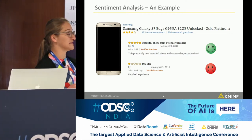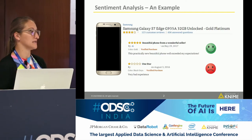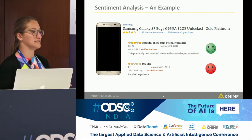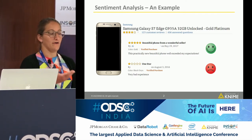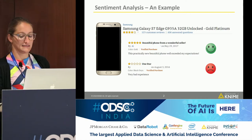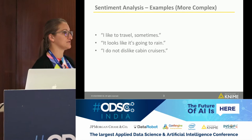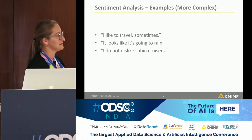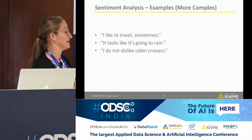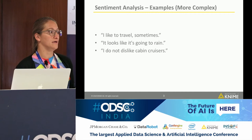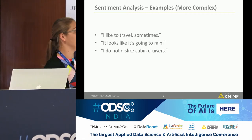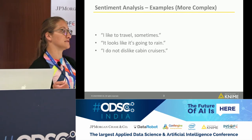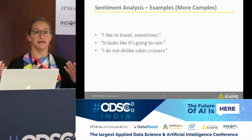Looking at two examples: in the positive one we have words like 'beautiful' and 'exceeded my expectations,' so it's easy to say that's positive. Or 'very bad experience' — it has the word 'bad,' so that's easy to classify. But what about 'I like to travel sometimes' — is that positive or negative? And 'it looks like it's going to rain' — 'like' has a different meaning. We have to teach an algorithm that words can have different meanings. Also, 'I not dislike' means I like it, even though 'dislike' has a negative meaning.